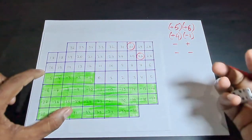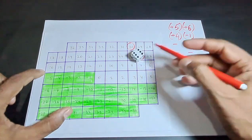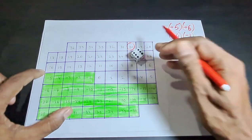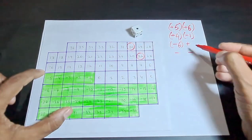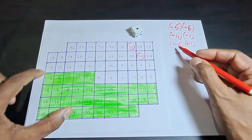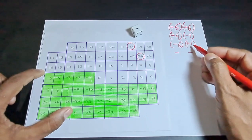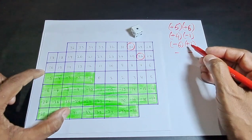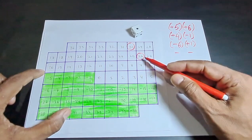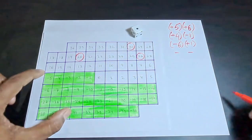In the third attempt, the first throw is taken as negative — minus 6 — and the second throw as positive. So minus 6 times plus 1 is minus 6, meaning he must move 6 steps further down from 26. He reaches 20 and places a circle there.